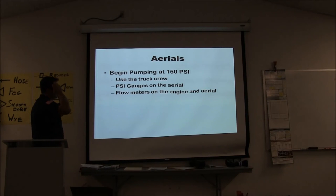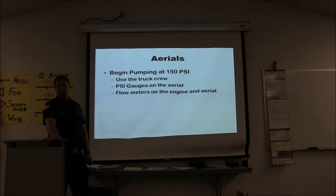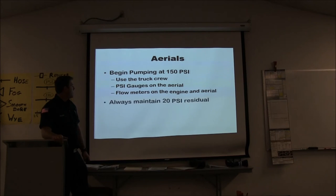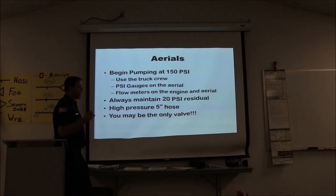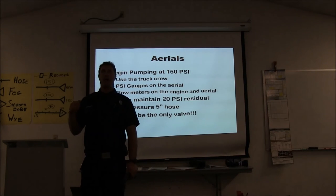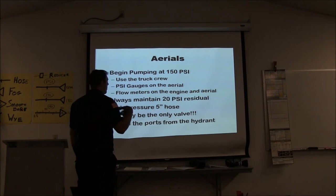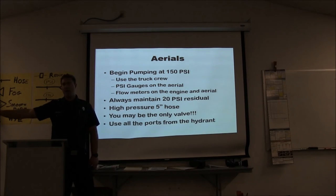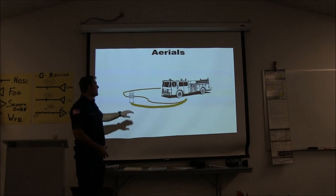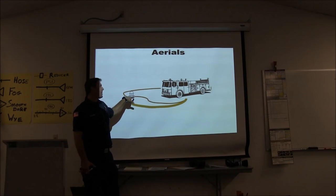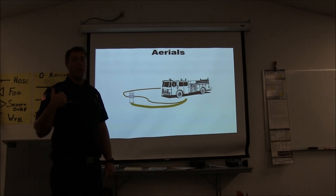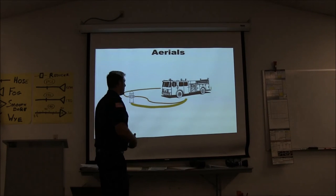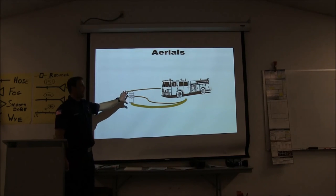When pumping to aerials, the new rule of thumb is to begin at 150 PSI for all aerials. Treat it like high-rise — use the pressure gauge and flow meter on the aerial and go from there. Always maintain 20 PSI residual when flowing big water. Use high-pressure hose if you can, and remember you may be the only valve since not all aerials have intake valves. Use all ports from the hydrant — park the engine close and give a longer supply line to the aerial. Using a five-inch plus two three-inch ports increases hydrant capacity by at least 30%, which is significant if you're flowing 3,000-4,000 GPM.